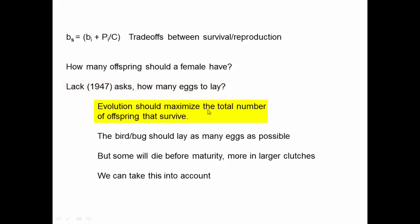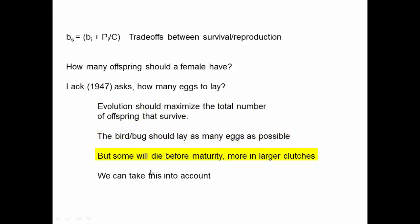Evolution should maximize the total number of offspring that survive. So naively, the bird or bug should lay as many eggs as possible. But some will die before maturity, and that is likely to be true for larger clutches — more will die before maturity in larger clutches. So when the birth rate goes up, survival may in fact go down. But we can take that into account when we do some calculations.